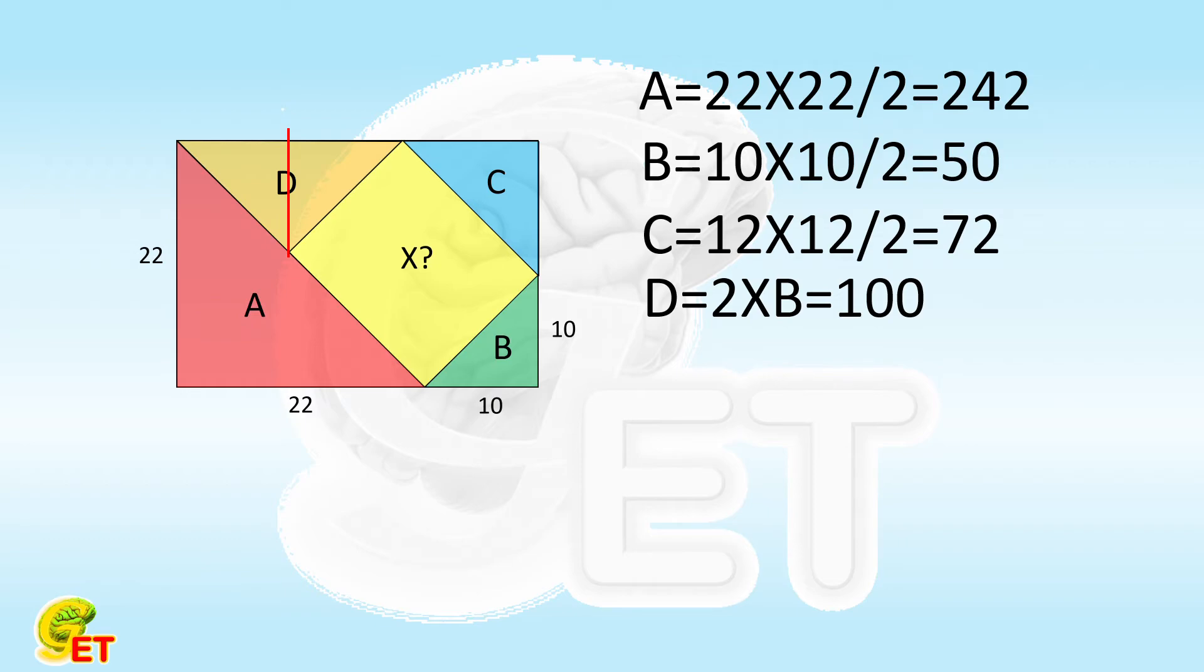Now, it is the turn of the whole rectangle, which equals 22 times the summation of 22 plus 10. So it equals 704.